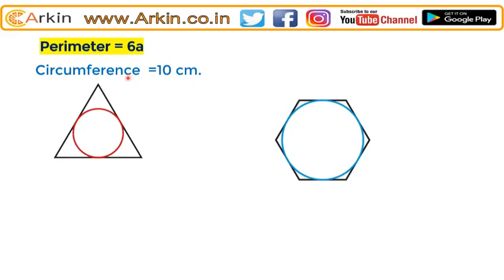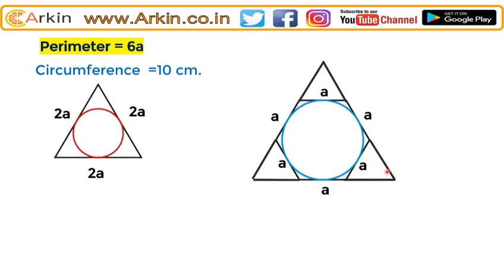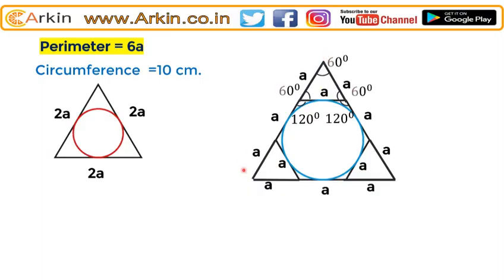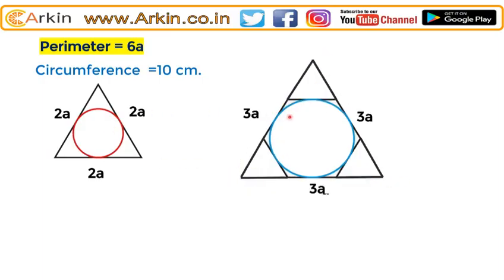With perimeter 6a, the triangle will have sides 2a, 2a, 2a, and the hexagon will have sides a, a, a, a, a, a. If we extend the sides of the hexagon, since it is a regular hexagon with each interior angle 120 degrees, the exterior angle is 60 degrees — forming small equilateral triangles of side a. We get a big equilateral triangle of side 3a.